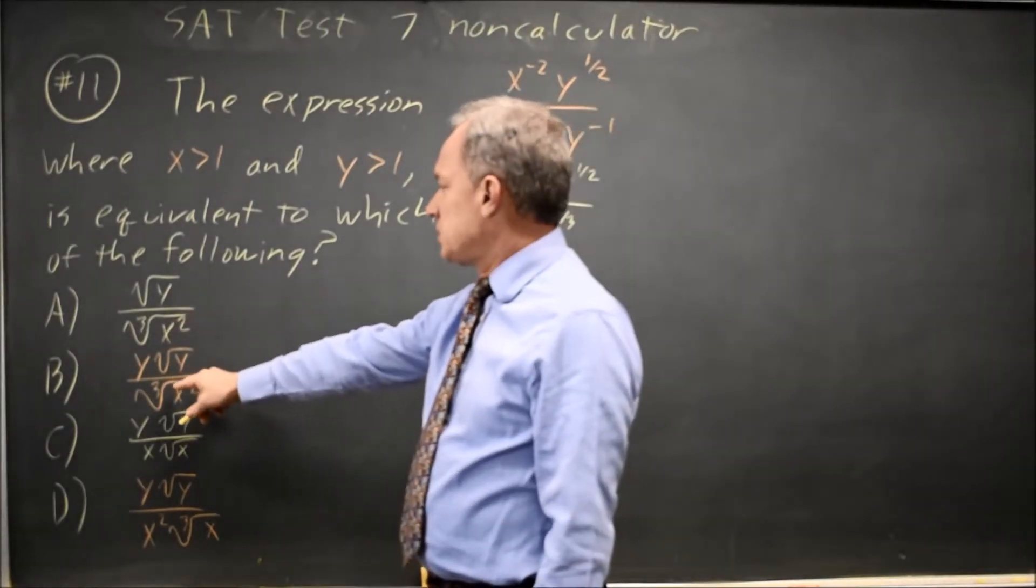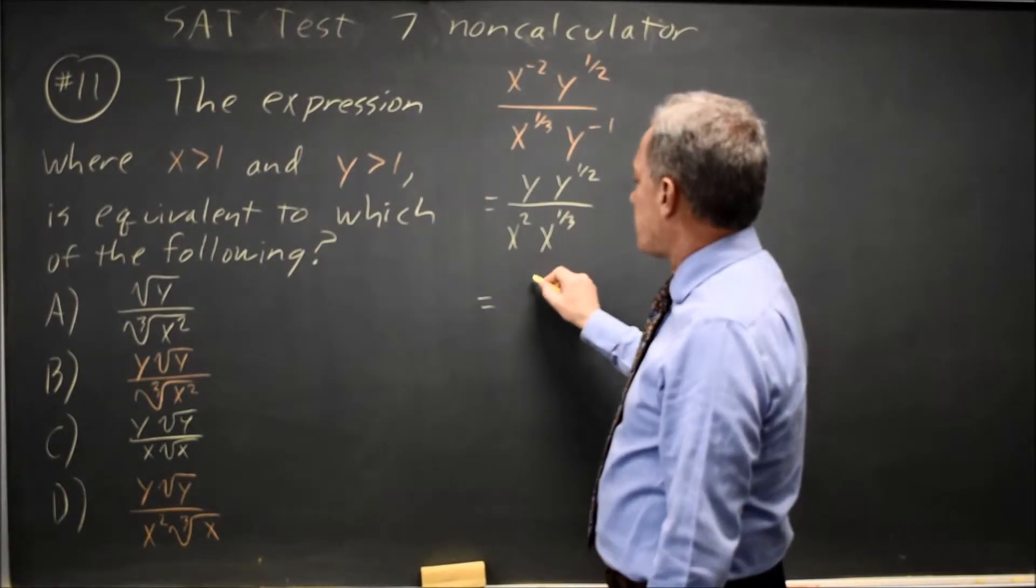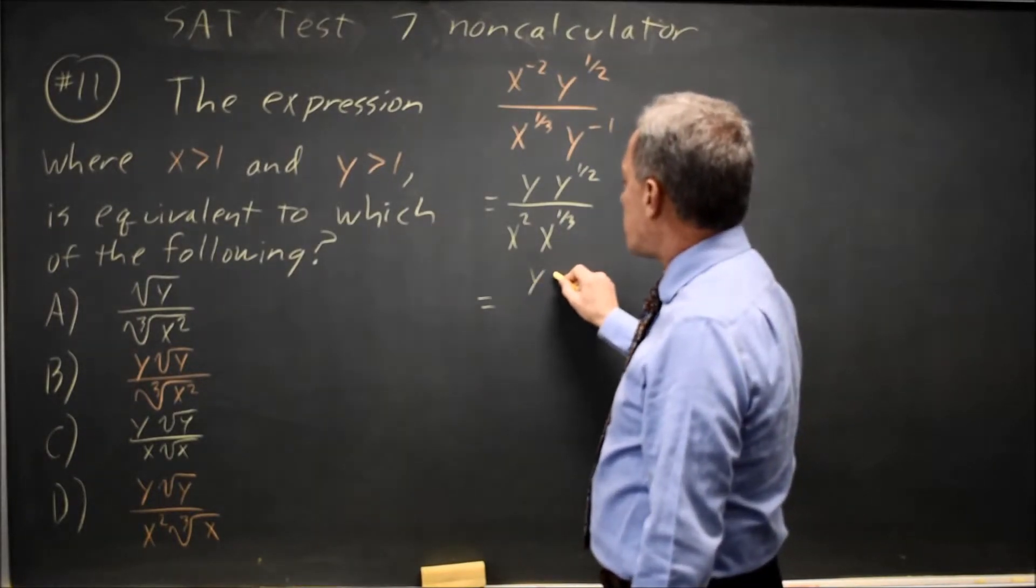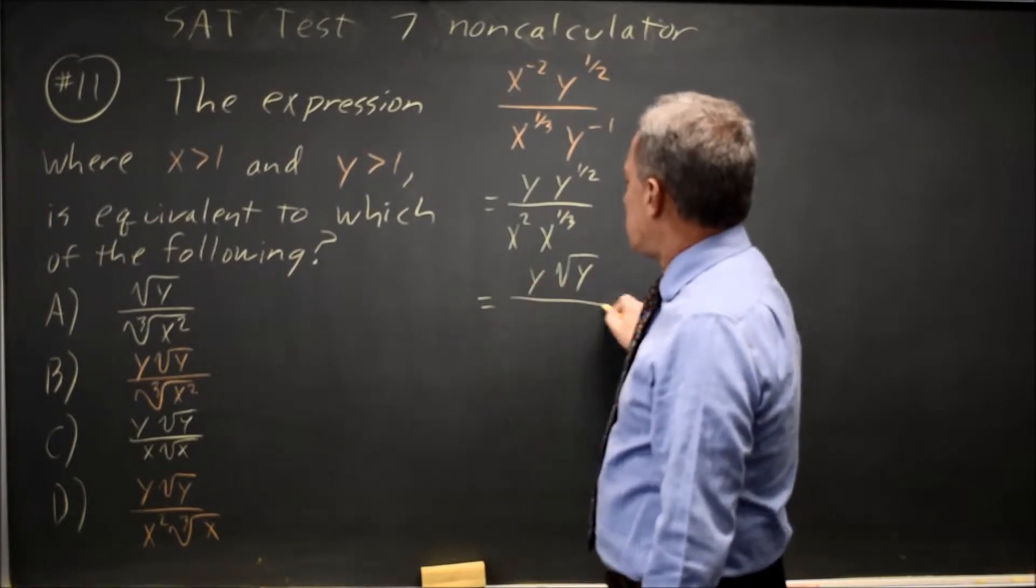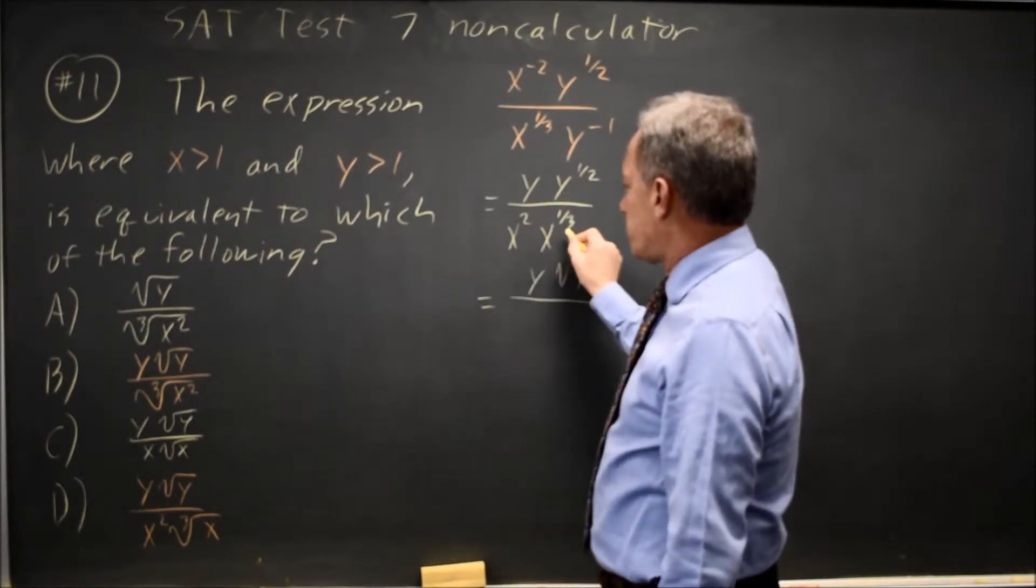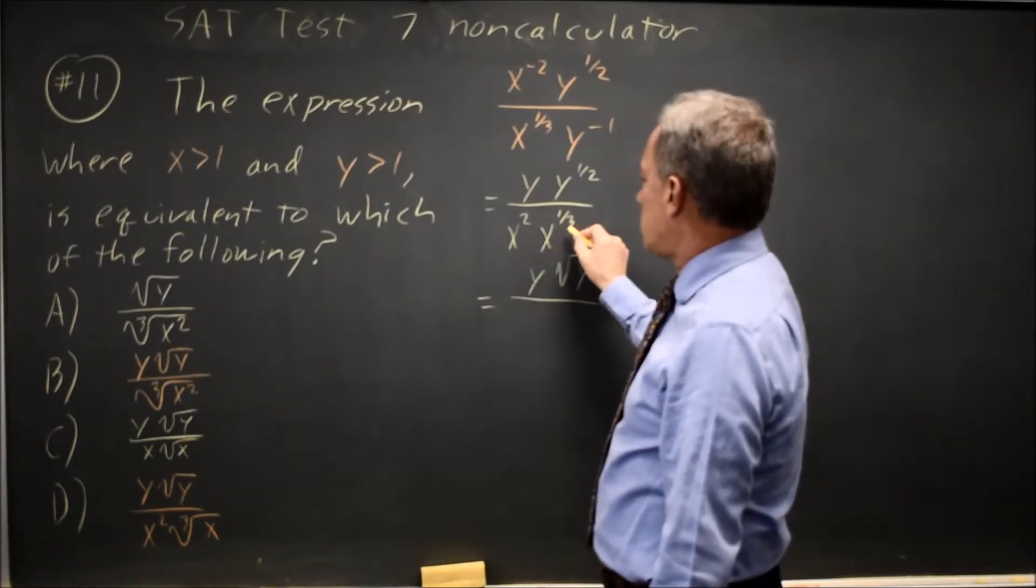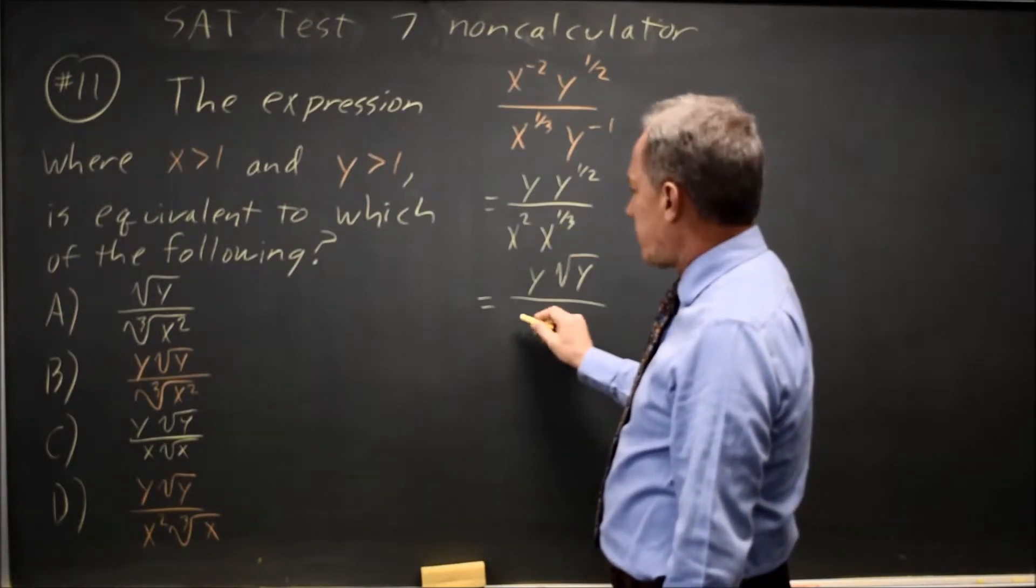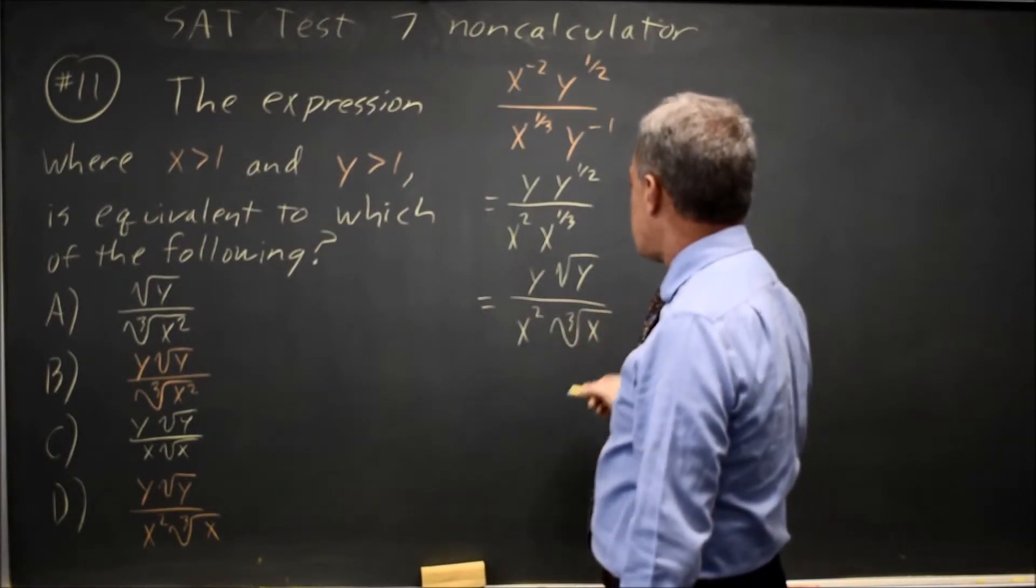Looking at how they write this, they don't want me to combine the y with the y to the 1 half. They want that as y and then y to the 1 half is root y. And they don't want the x squared combined with the x to the 1 third. They want the x to the 1 third as a radical, so that would be x squared times cube root of x.